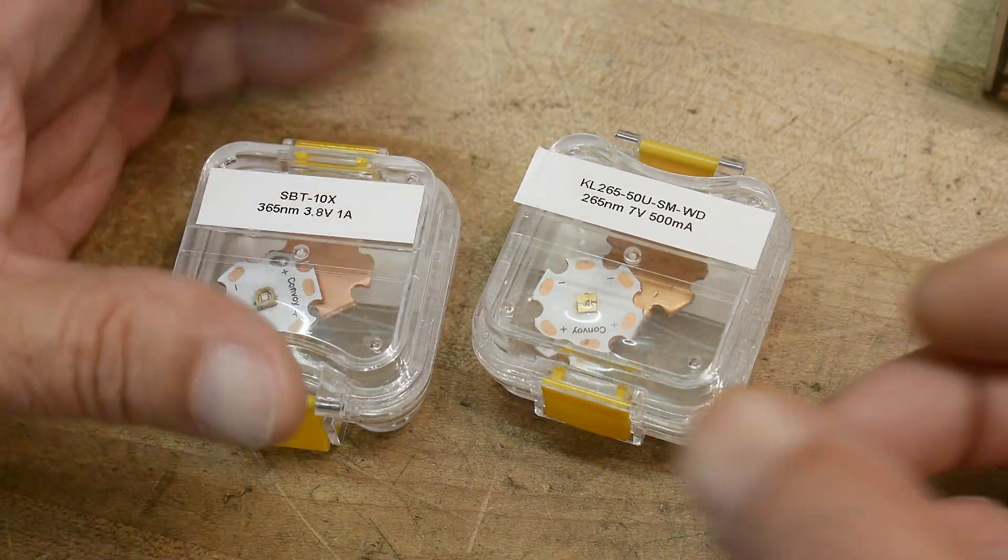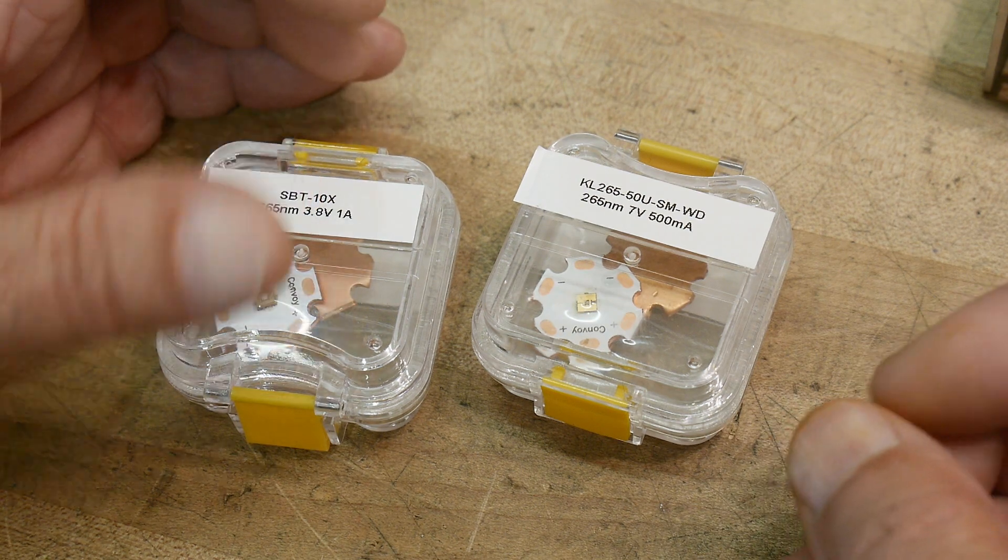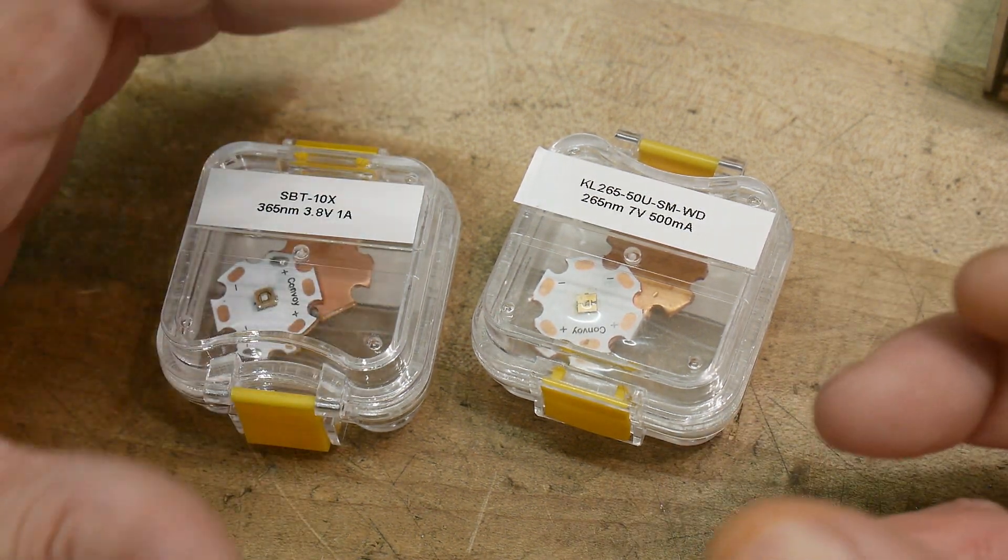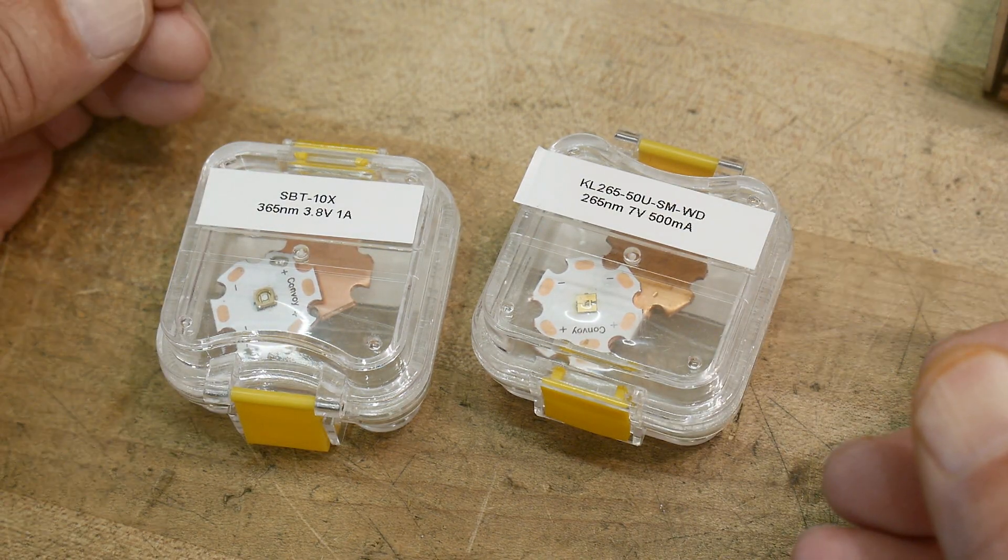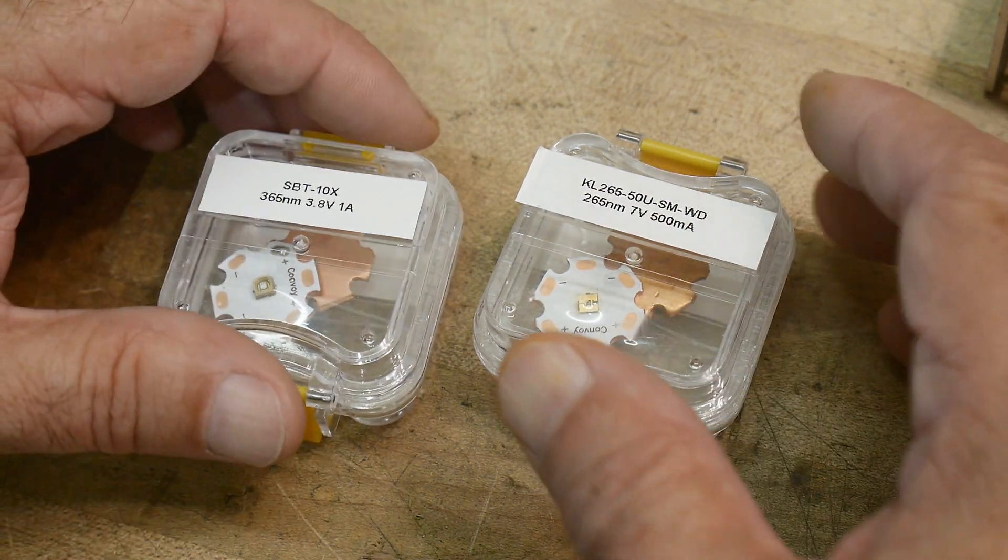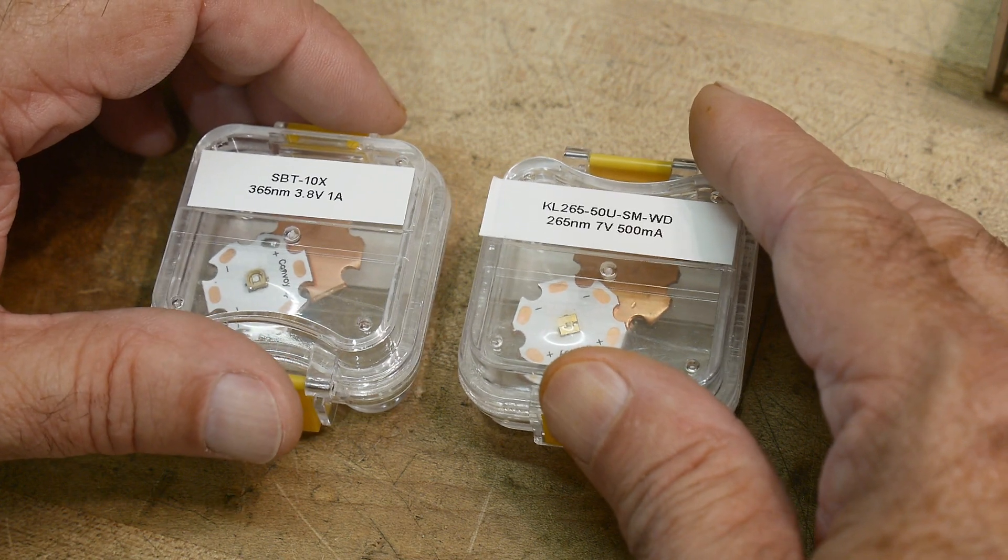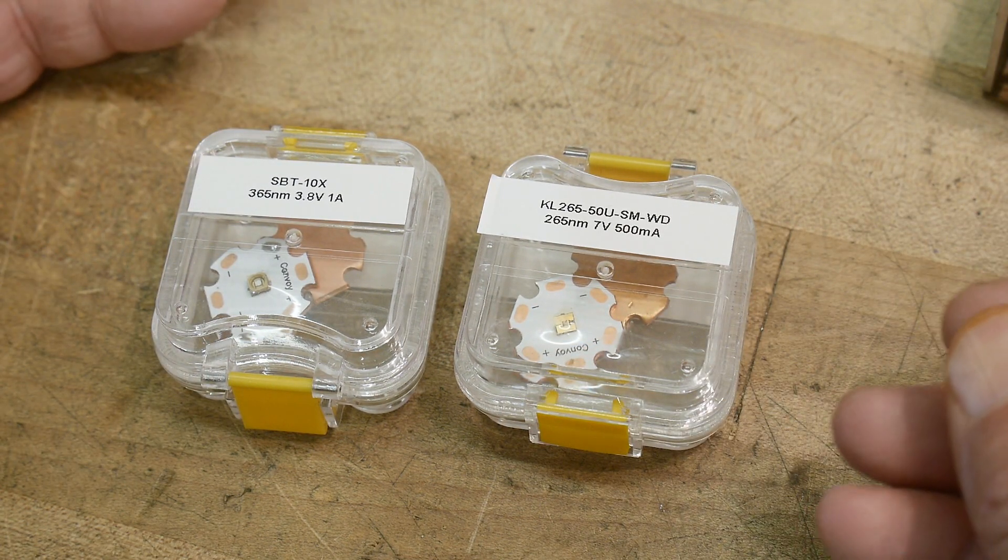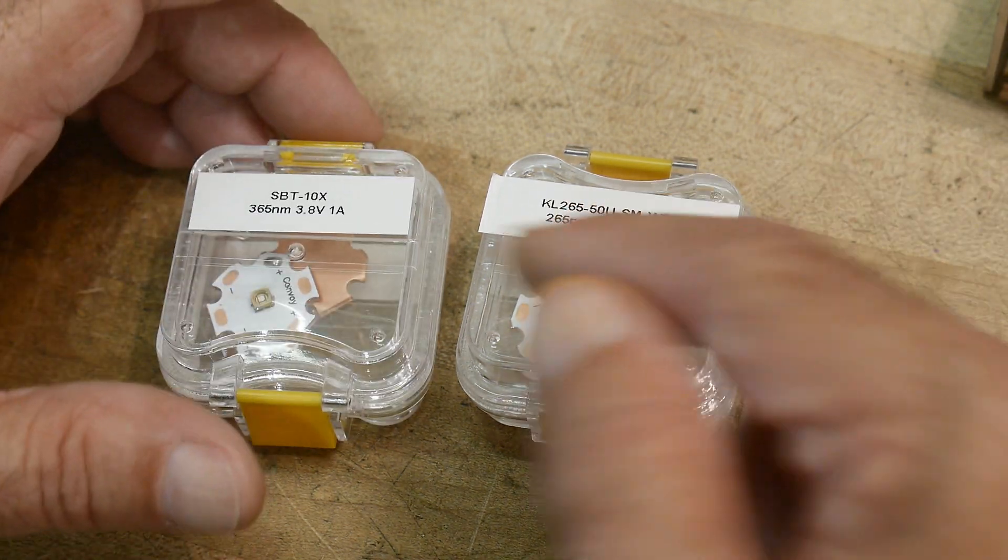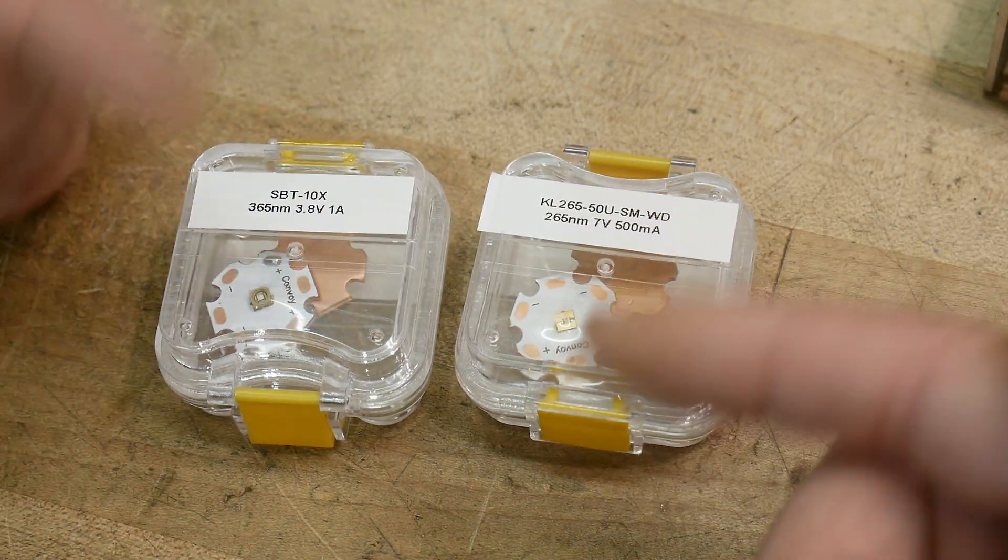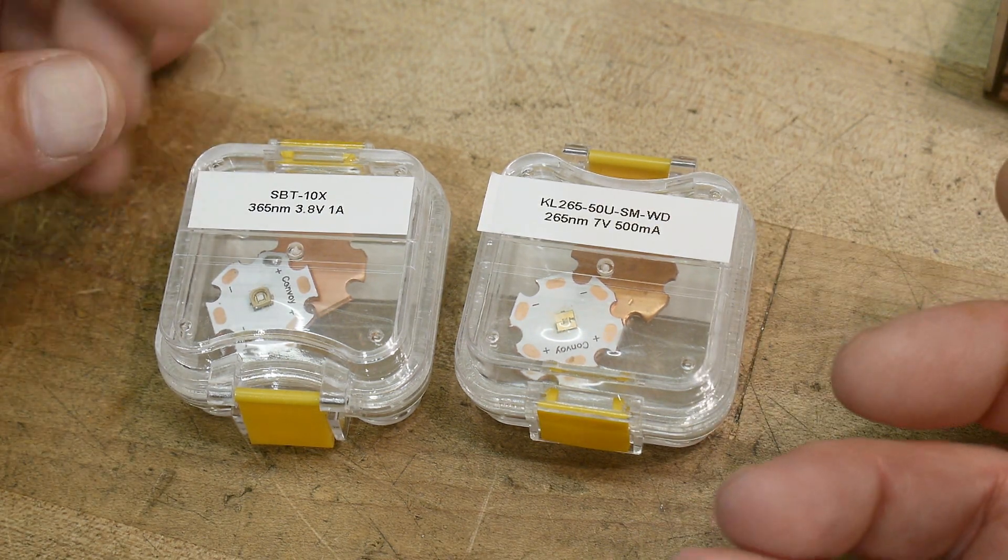And the tubes are coated such that the ultraviolet light doesn't get out and protects you from it. It's just used internal to the tube to make white light. And so the reason that I wanted to get these was to fluoresce things. So I'm going to shine these on different materials, and those different materials will absorb these short wavelengths and then re-emit light at longer wavelengths.